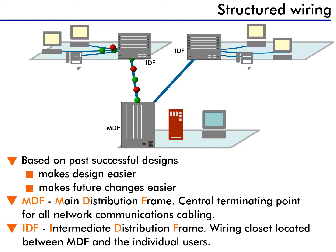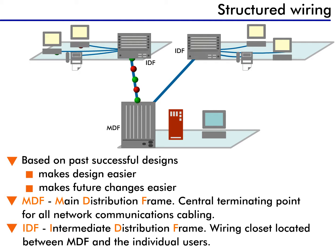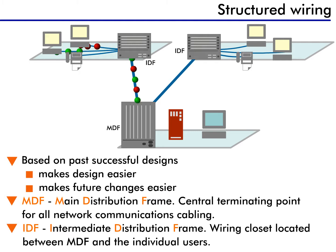An example similar to structured wiring in networks is electrical wiring. Imagine the wiring in your house. There are standards that dictate where electrical equipment and wiring must go, and how the wires are routed in the walls. What if every electrician did things his or her own way with no common standard? It would be very difficult and expensive to fix or modify a house's electrical system. Well, that same idea holds true for networks.